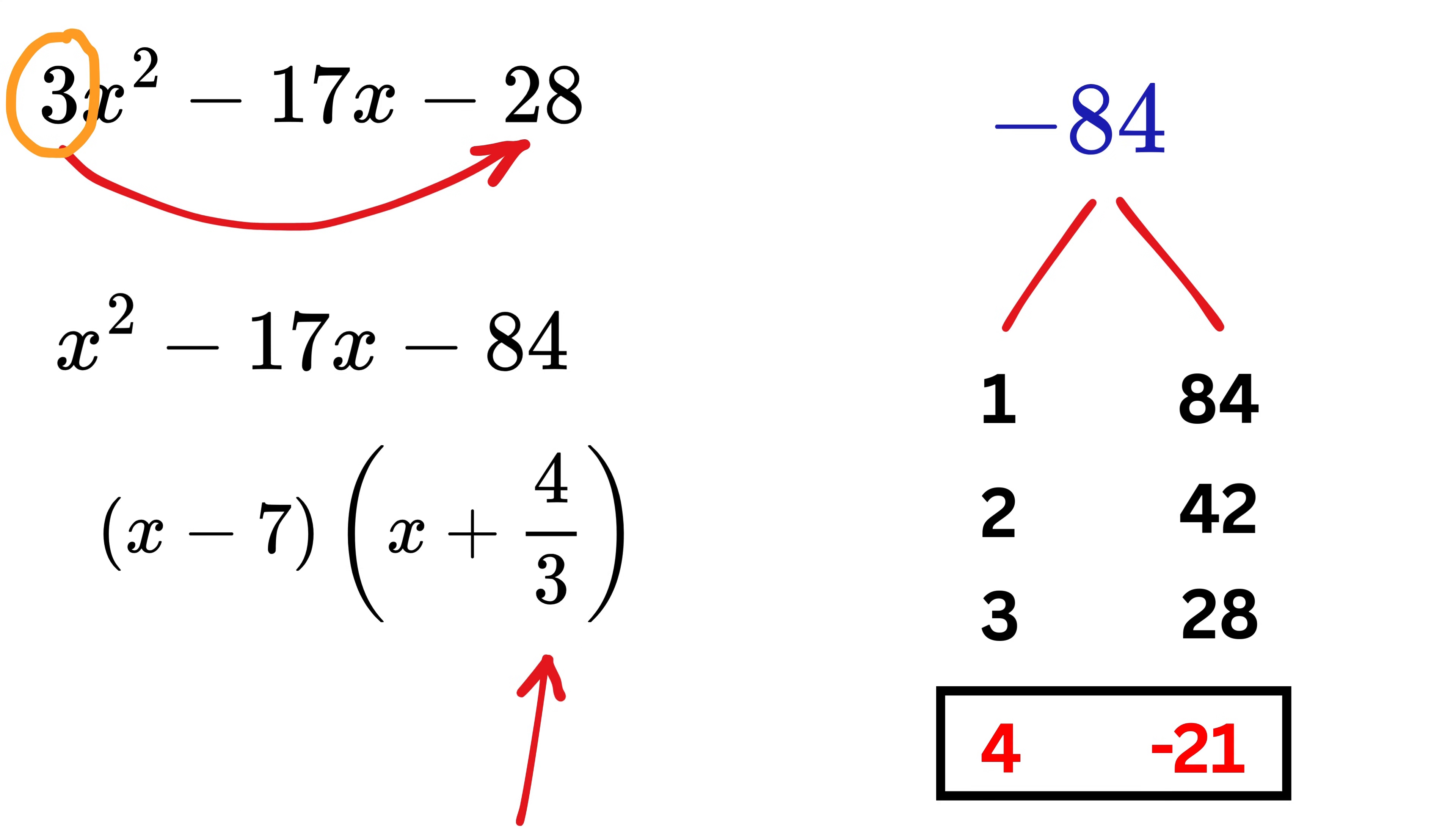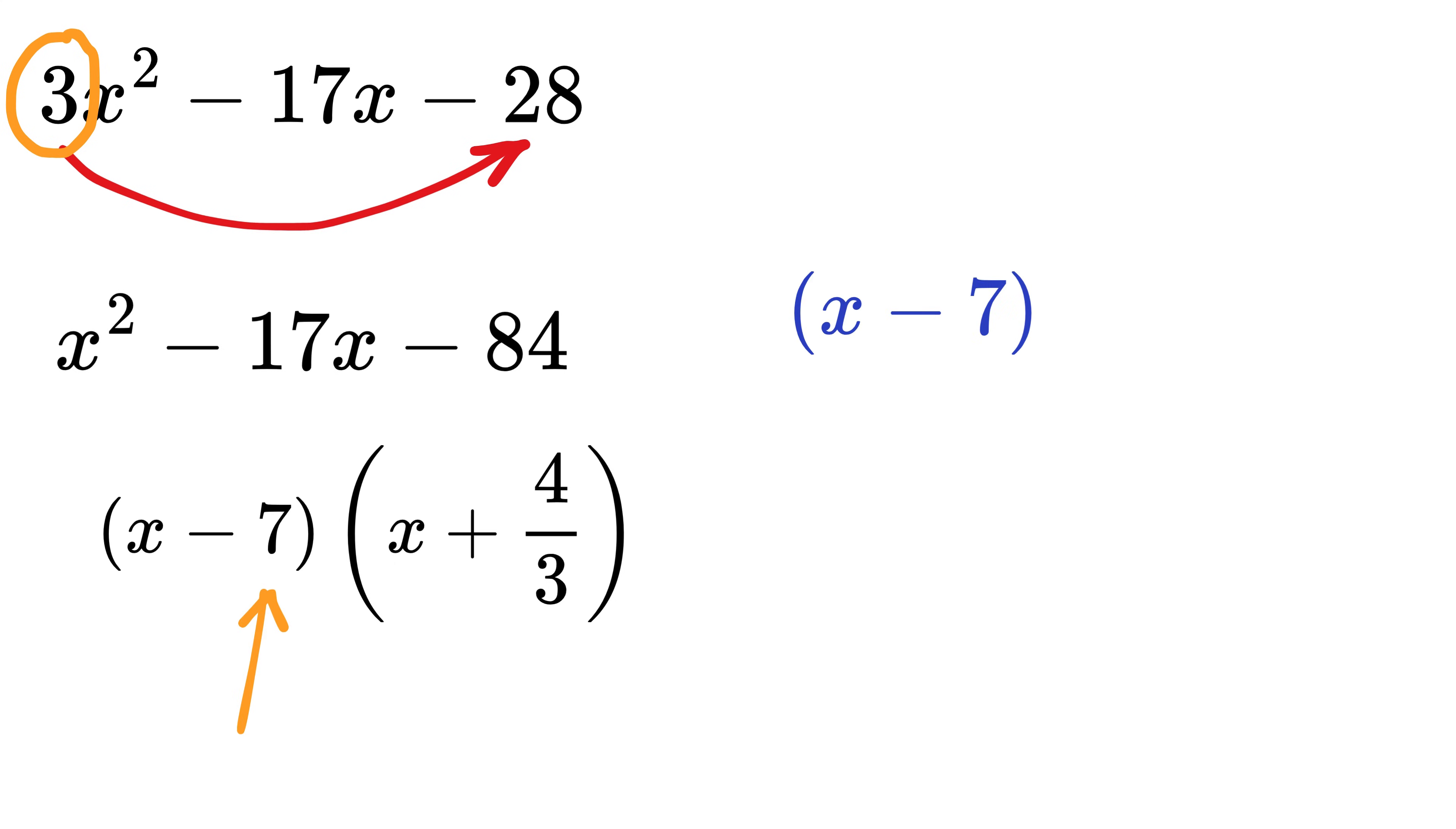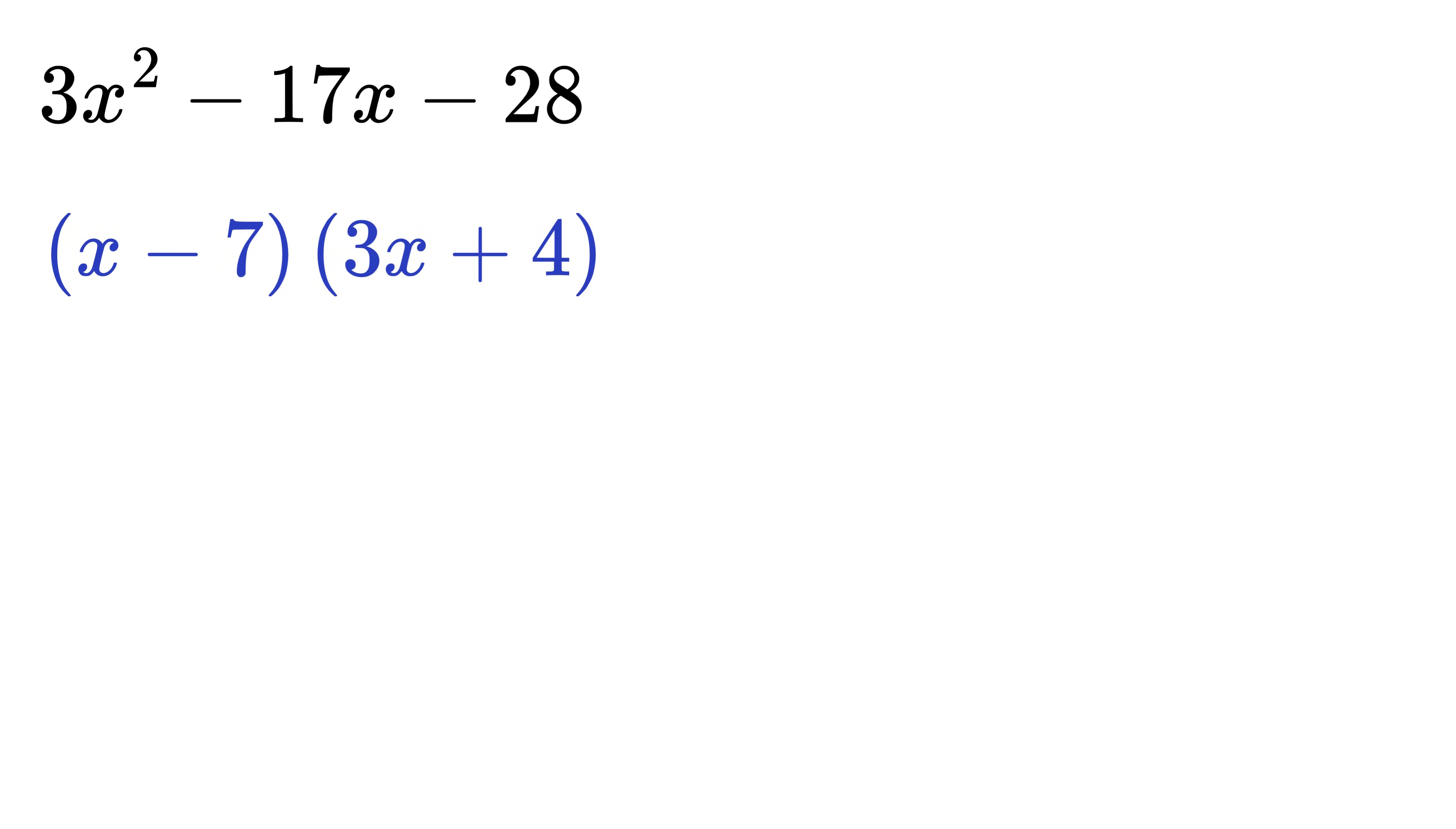and this becomes 4 over 3. So do nothing here and take this 3 here to get 3x plus 4 and remove this denominator. Thus the factors of this quadratic expression are x minus 7 and 3x plus 4. That was simply out of this world.